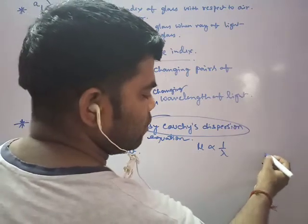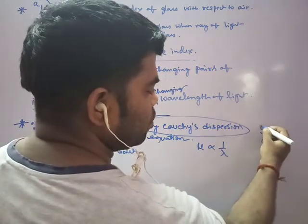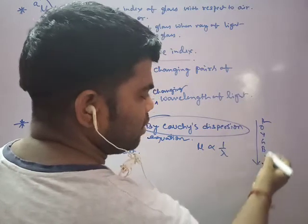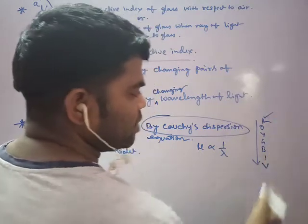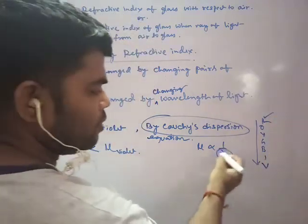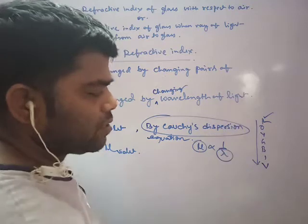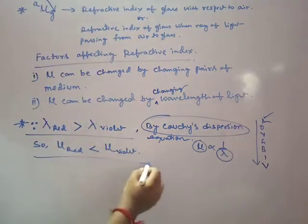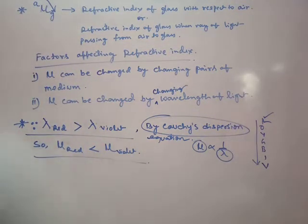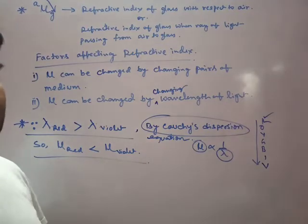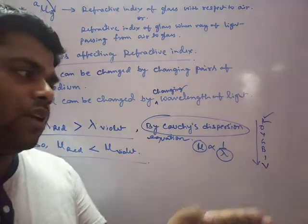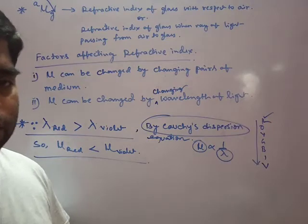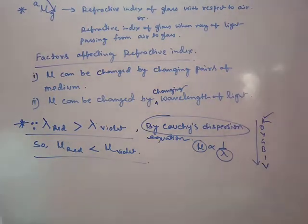By VIBGYOR, we know that violet has the smallest wavelength. If wavelength is high, refractive index is less. So the refractive index of violet color is higher than that of red color.